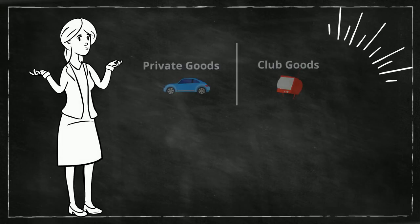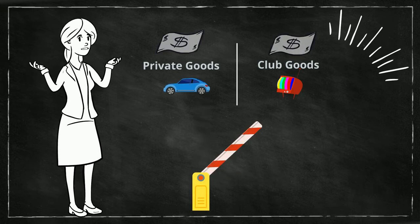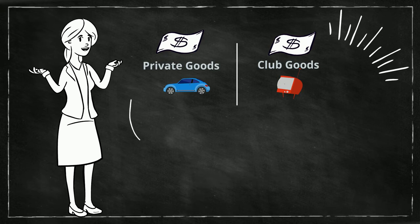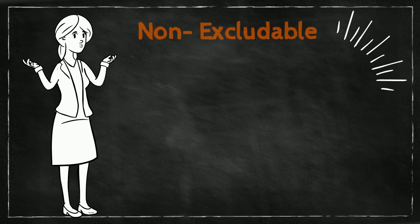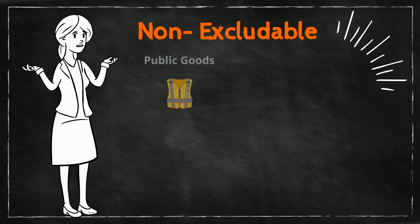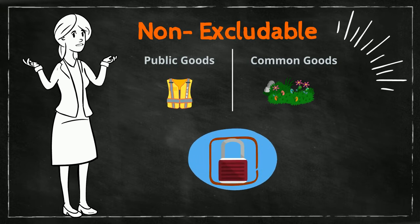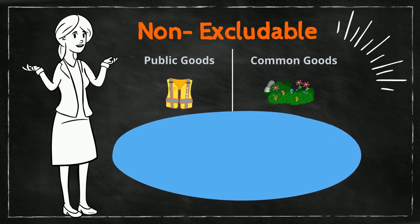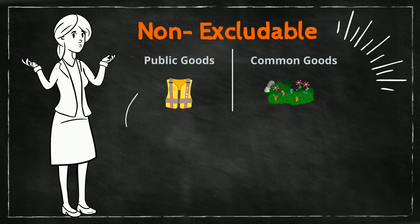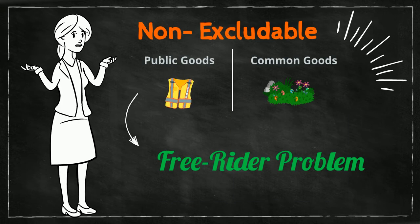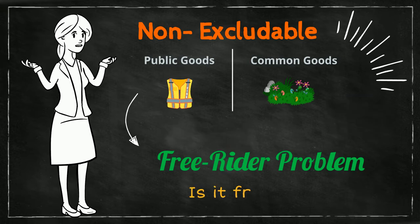The important thing here is that there are mechanisms in place to check that only those people who have paid for the good are allowed to use it, making these goods excludable. For goods in the non-excludable category — that is, public goods and common goods — the characteristic of the good is such that it is not possible to prevent people from using it. This makes them prone to the free rider problem, where anyone can use or derive benefits from these goods without paying for their maintenance.